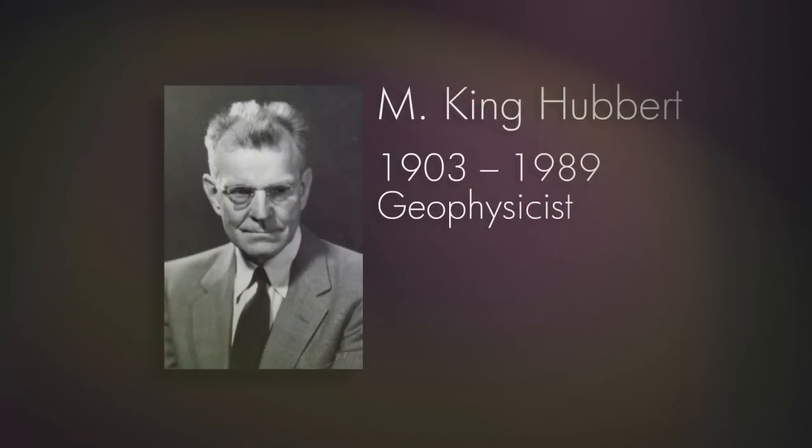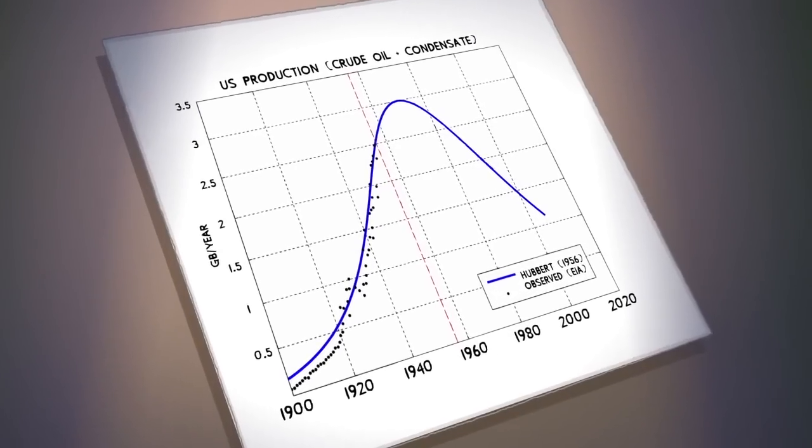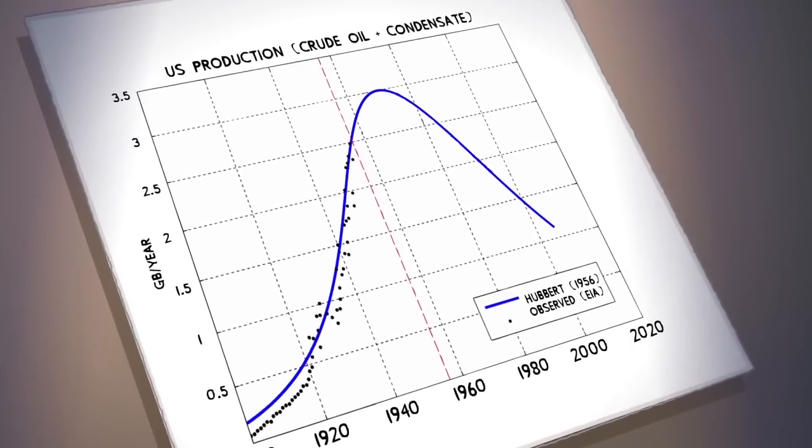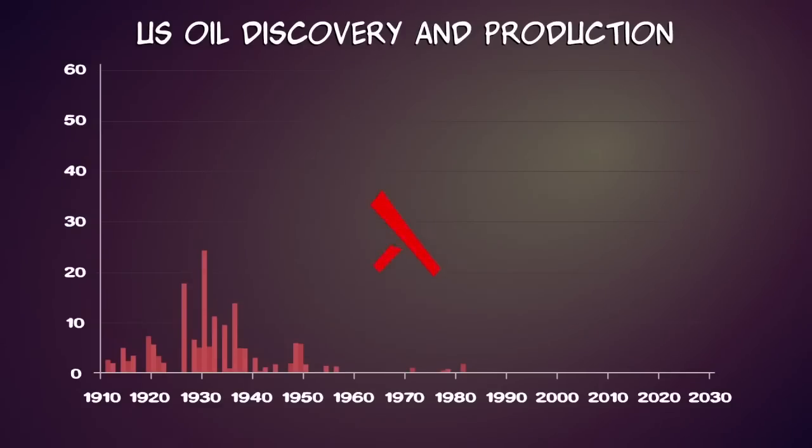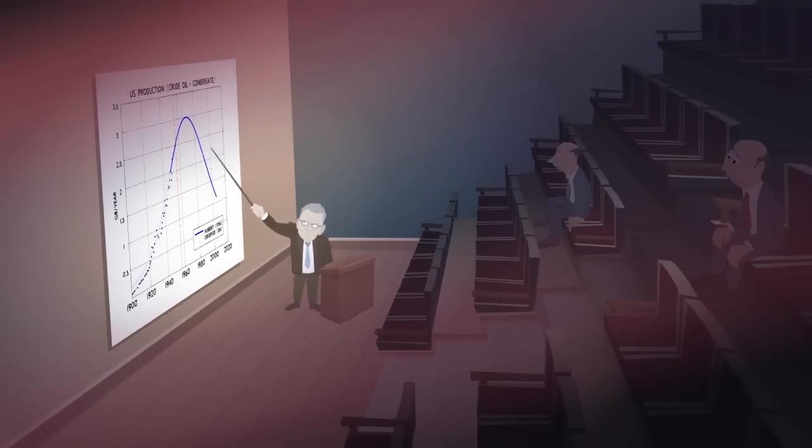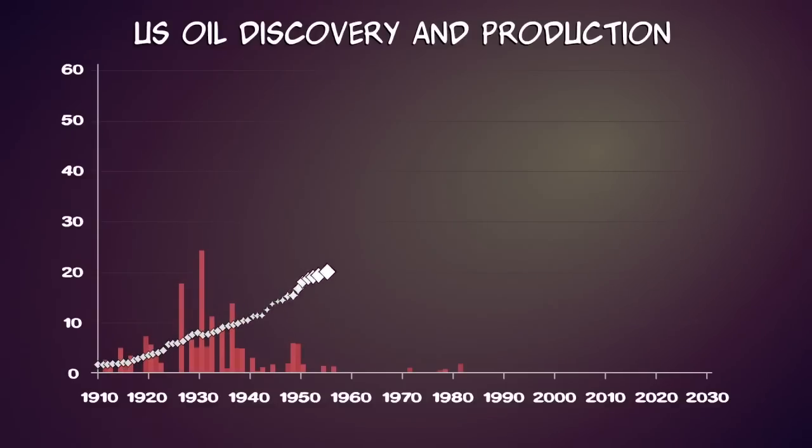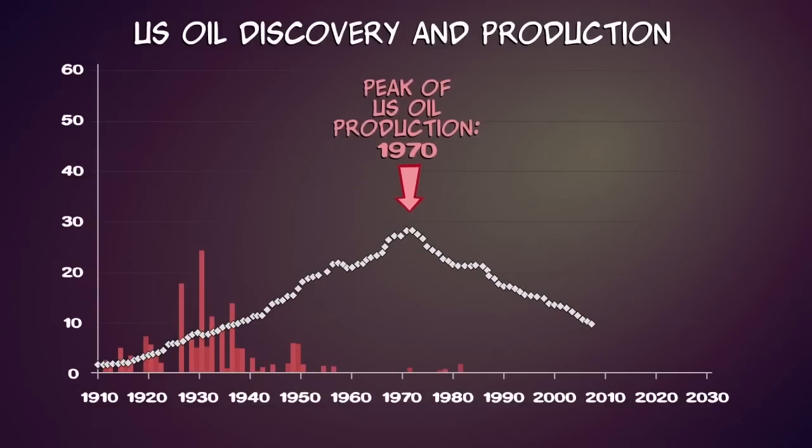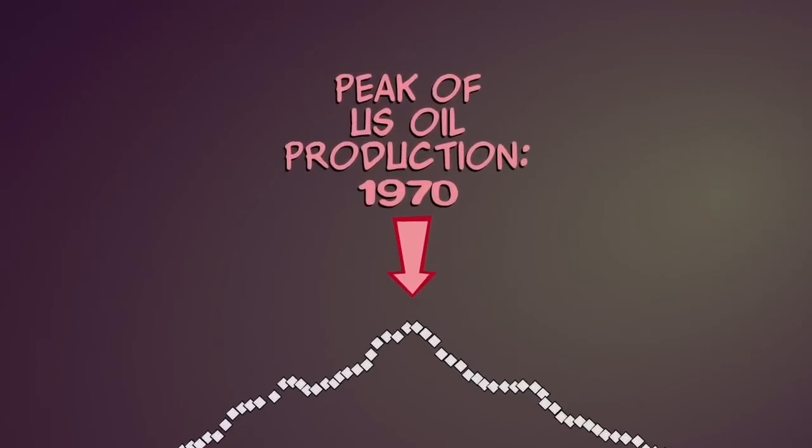In the 1950s, Shell geophysicist M. King Hubbert predicted that America's oil production would peak in 1970, 40 years after the peak of US oil discovery. Few believed him. However, in 1970, American oil production peaked and entered a permanent decline. Hubbert was vindicated.